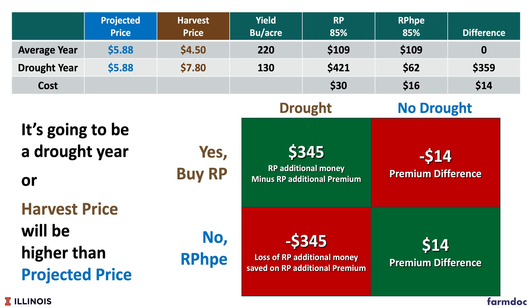To further illustrate, let's consider a drought example simulated roughly equal to the 2012 drought. We have a 220 bushel APH yield and a projected price of $5.88. If we have a drought during that year — simulated as a 130 bushel yield with the price going up to $7.80 — and you buy RP, you would have $345 more in additional money from that RP purchase. During that drought year, you would receive something like $421 in payments under RP versus $62 under RPHPE.